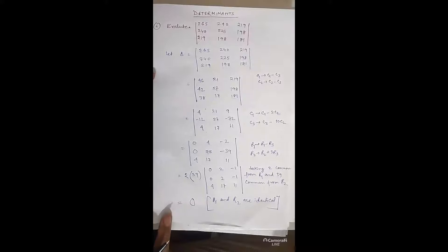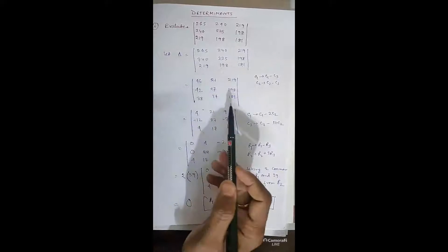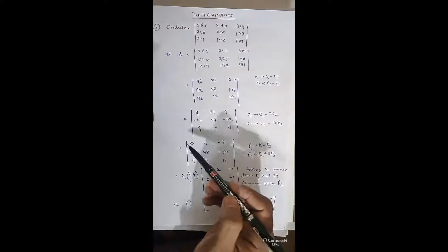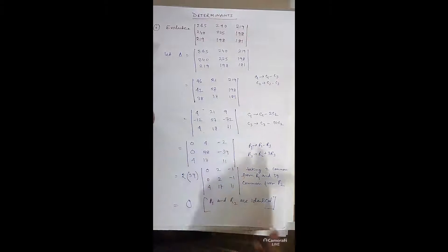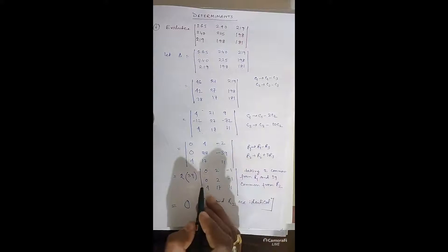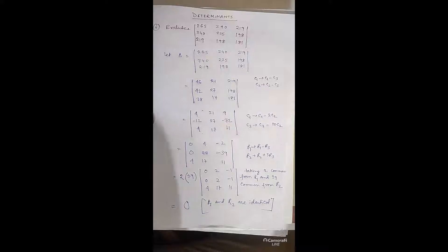So the strategy is: whenever numbers are very large, our first target is to make the numbers small. Then the next target is to make the maximum number of zeros. If any two rows or columns become identical, we can directly write 0. Otherwise, if identical rows/columns are not obtained, we expand through the row or column which has the maximum number of zeros.